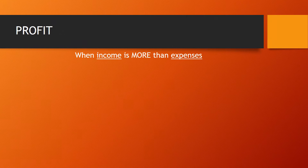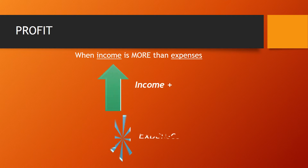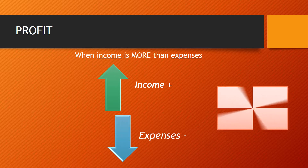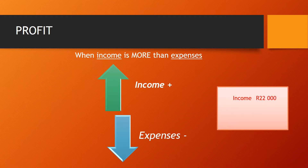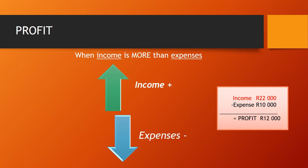We are starting with Accounting Concepts number 2. The first one is Profit and Loss. Profit is when income is more than expenses. For example, if a business has an income of 22,000 rand and they spend 10,000 rand, that business is left with 12,000 rand. You can already see that the income is more than expenses, and so this business has made a profit — because their income is more than their expenses.